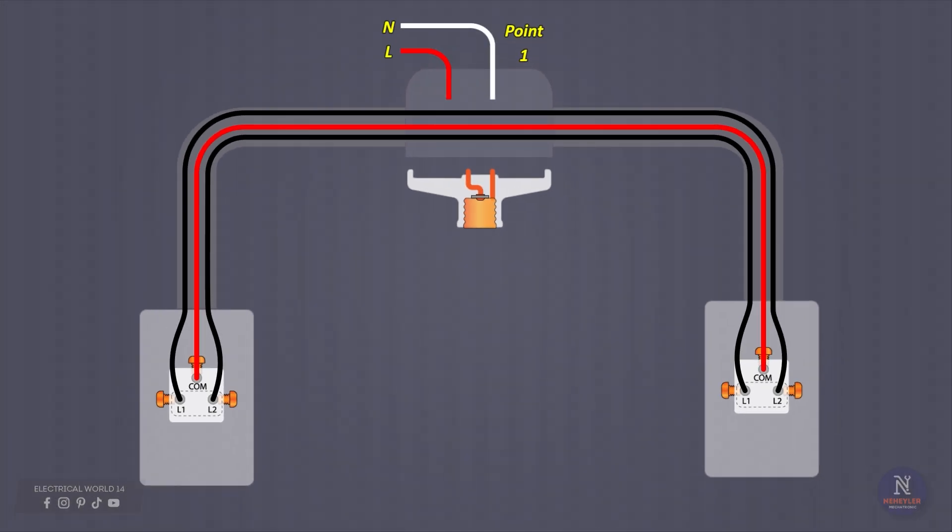Then, the cable of a different color, which for this case I have considered red, is cut at point 1. One of the ends is connected to the phase, while the other end of the cable is connected to the central terminal of the socket. Finally, the neutral cable is connected to the terminal of the socket indicated by the threaded part, and that's it.